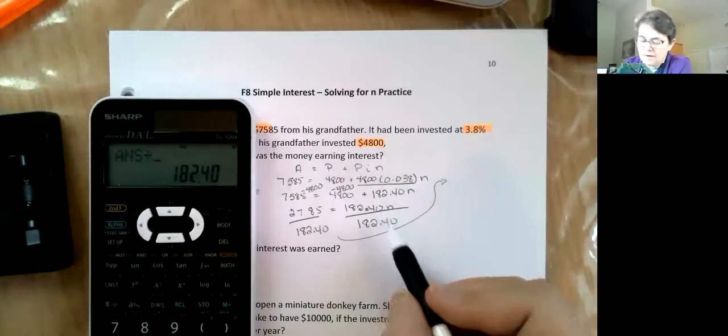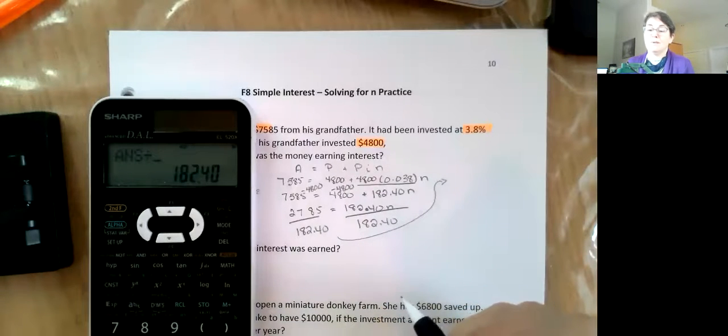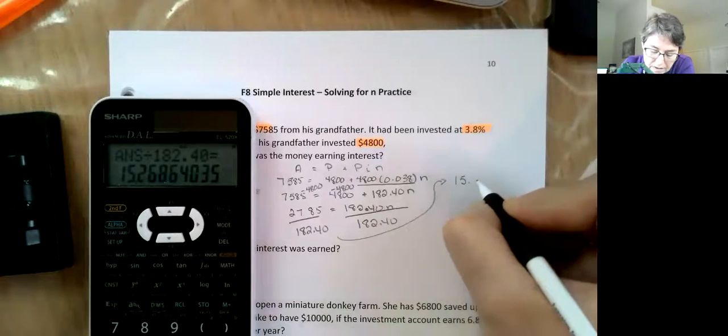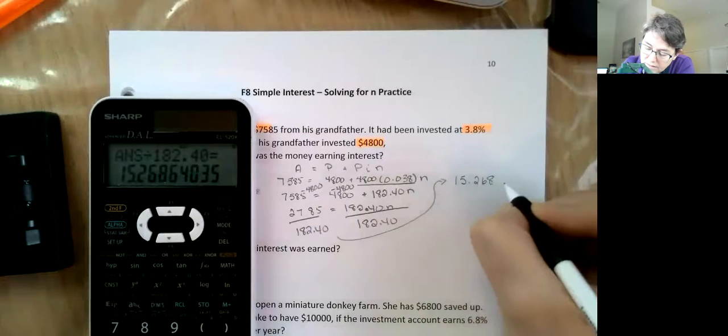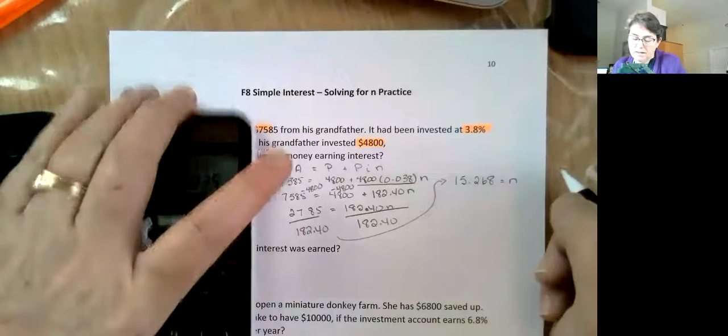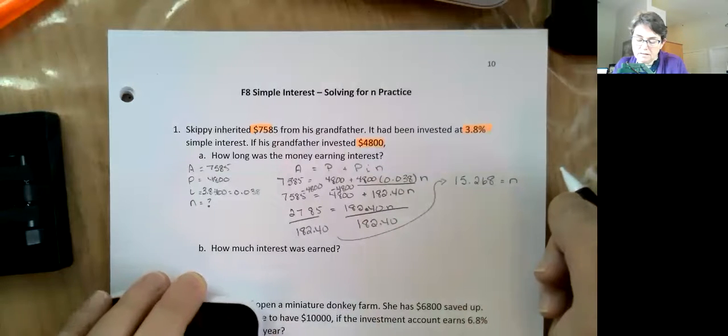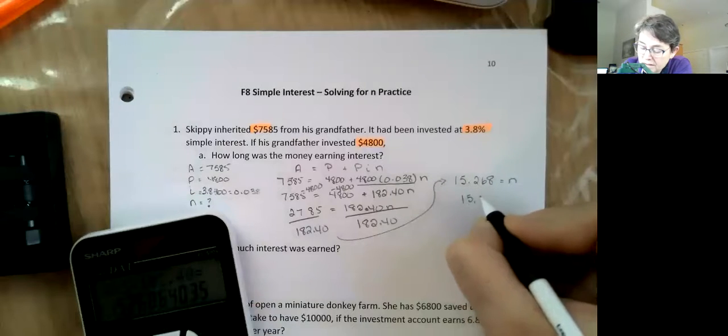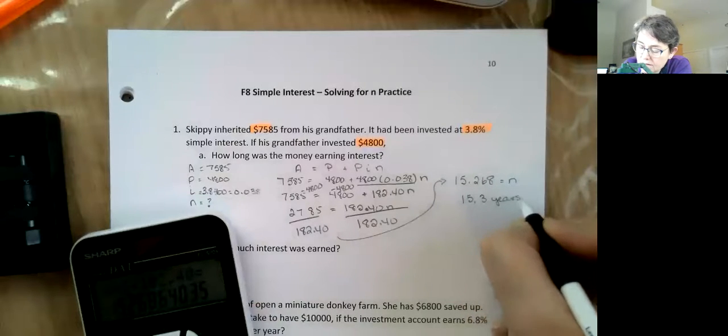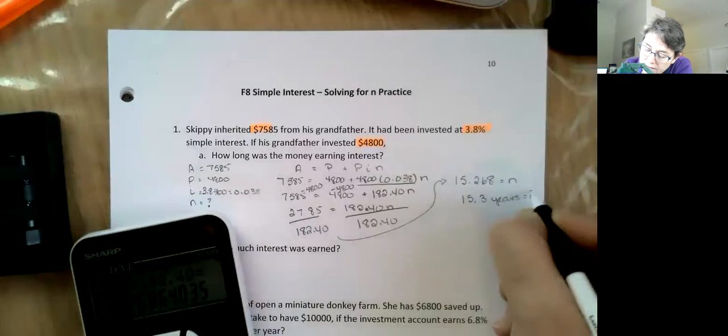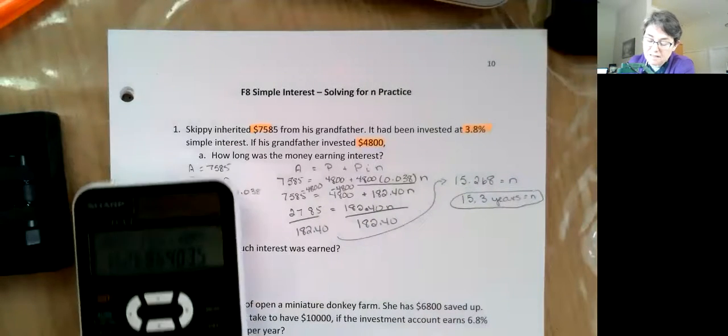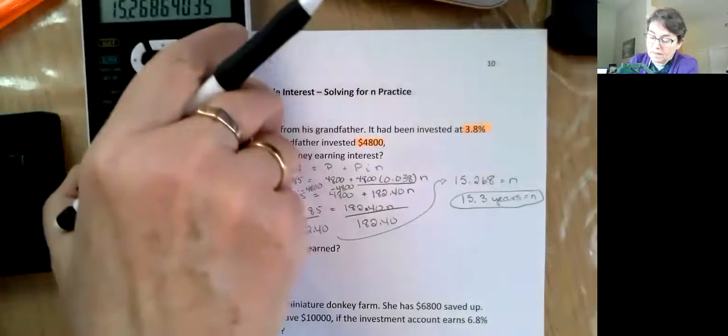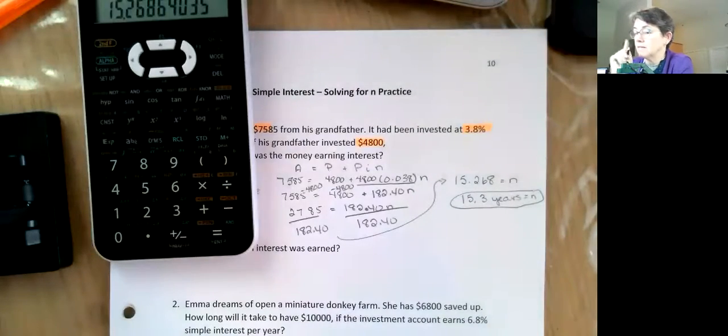I almost did it, my brain wanted to combine those $4,800s together. Nay nay my friends. You need to pay attention and look for those variables. We're going to multiply that through first. $4,800 times 0.038 equals $182.4N. So $7,585 minus $4,800 equals $2,785 which equals $182.4N. That's 15.268. Well, it doesn't say how long to round that, so I'm going to go 15.3 years. Because I didn't tell you how to round it, 15.268 was fine, 15.3 was fine, 15 years would be fine.